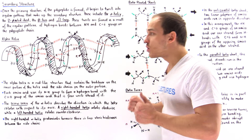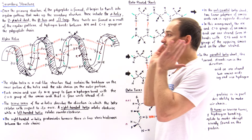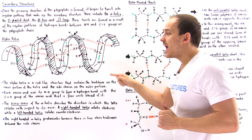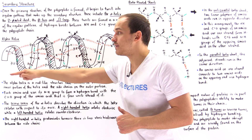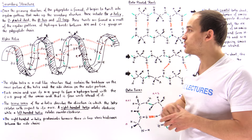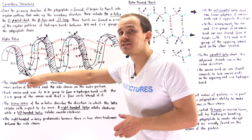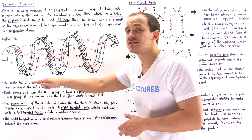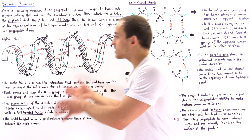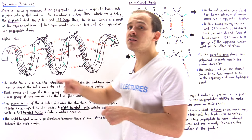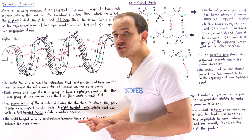The screw sense of our alpha helix describes the directionality of rotation about the axis of rotation. If we look at the axis of rotation and examine the directionality of that rotating polypeptide chain, in this case it points in the clockwise direction. Going this way is clockwise, and so the screw sense of this alpha helix is clockwise — this is known as the right-hand helix.